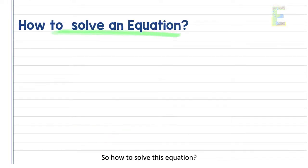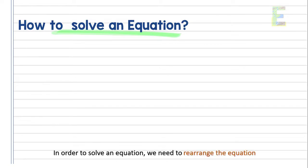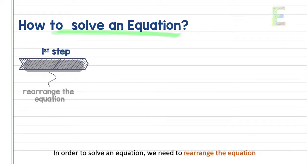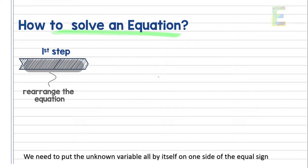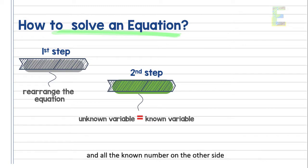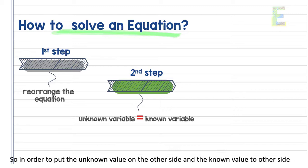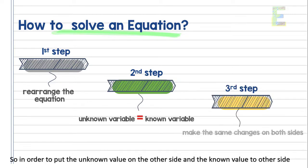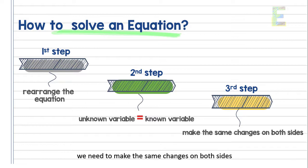So, how do we solve this equation? In order to solve an equation, we need to rearrange the equation. We need to put the unknown variable all by itself on one side of the equal sign and all the known numbers on the other side. In order to do that, we need to make the same changes on both sides.